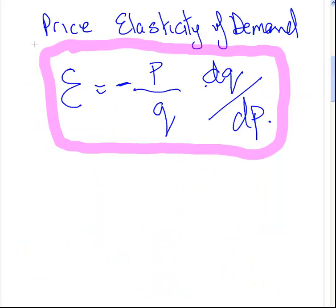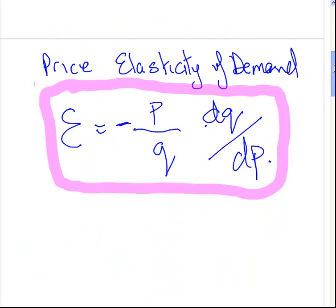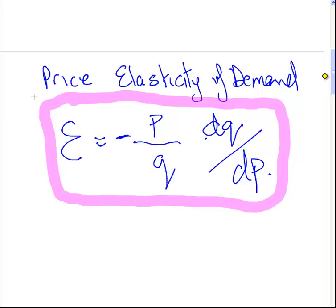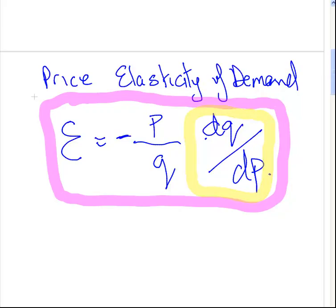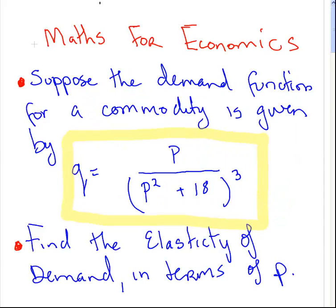So that's the job. Essentially, this is the equation we have to set up. We're given Q already — given an expression for Q — and we're asked to find this expression in terms of P. So what we're going to do is evaluate this and differentiate that term. It essentially boils down to differentiation.